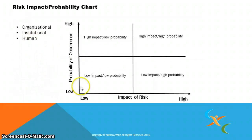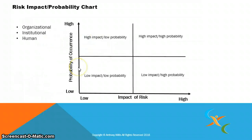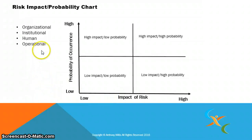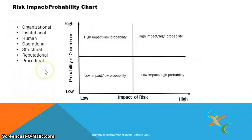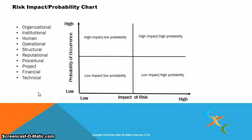Human factors also would impact the program — high probability of occurrence and high impact on the program. Operational elements, structural elements, reputational elements, procedural, project, implementation of the program, financial, and technical factors all need to be considered.